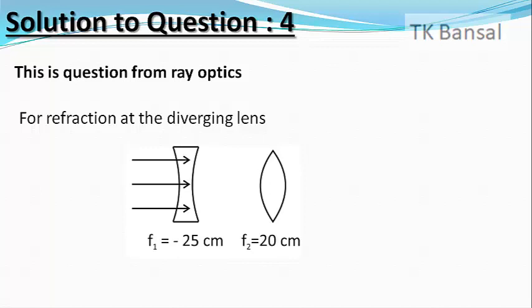So U1 equals minus infinity and F1 equals minus 25 cm.